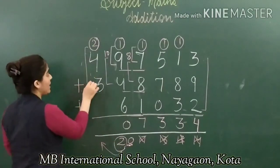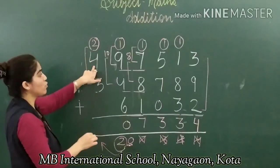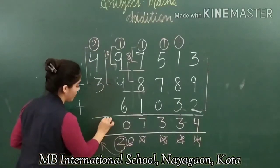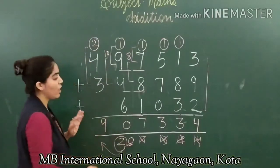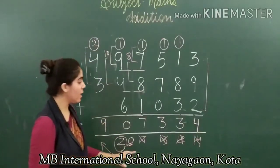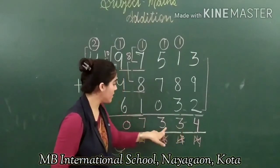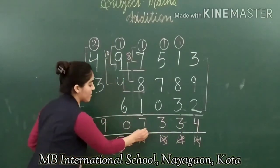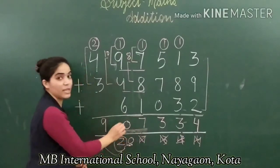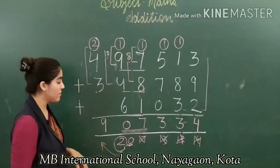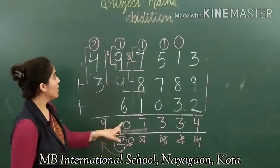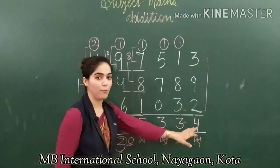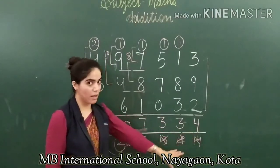Four plus two is six, six plus three is nine. Now we have the sum. Reading place values — ones, tens, hundreds, thousands, ten thousands, lakh — reading together: nine lakh, seven thousand, three hundred, thirty-four. This is our sum.